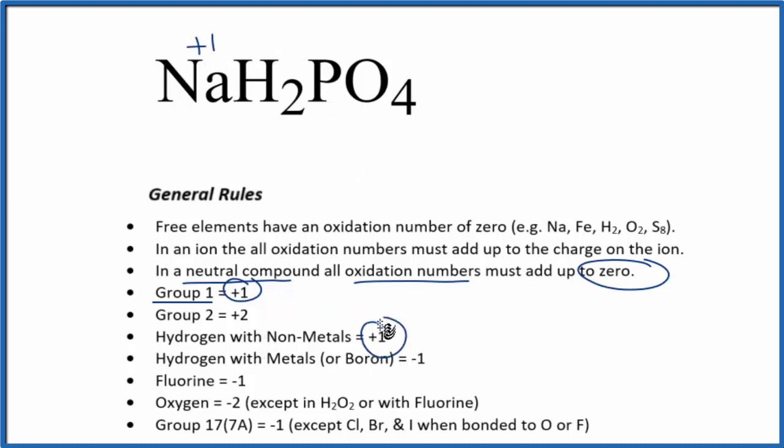Hydrogen, that's going to be plus one. And then phosphorus, we don't know looking at these rules here. But we do know that oxygen is going to be minus two, with a few exceptions. So we're going to say x here for the phosphorus.